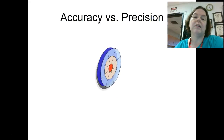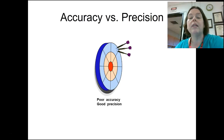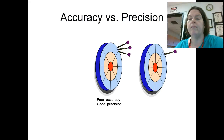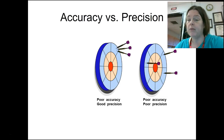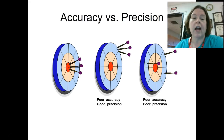Accuracy versus precision: think of it as a bullseye. We shoot three darts at the bullseye. If they all land in the same spot but not the bullseye, that's poor accuracy but good precision — all darts went to the same location. If nothing hits the bullseye and nothing is grouped together, that's poor accuracy and poor precision. And if every dart hits the bullseye every time — that's both good accuracy and good precision.